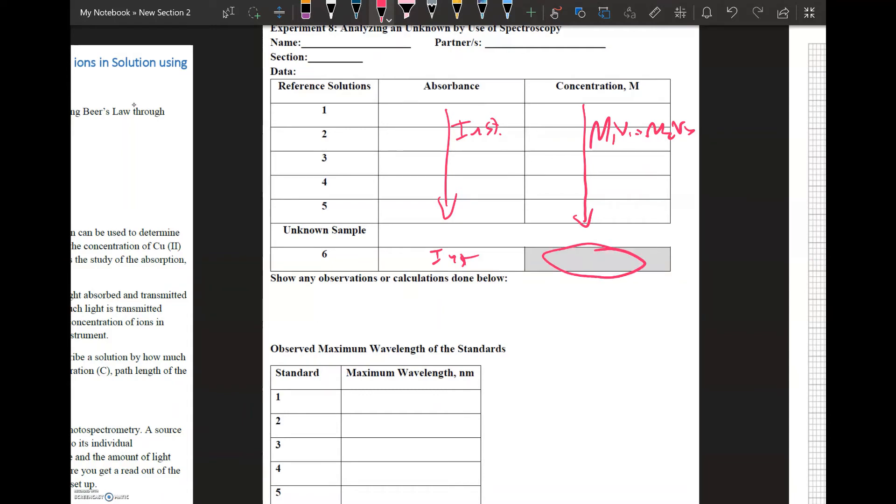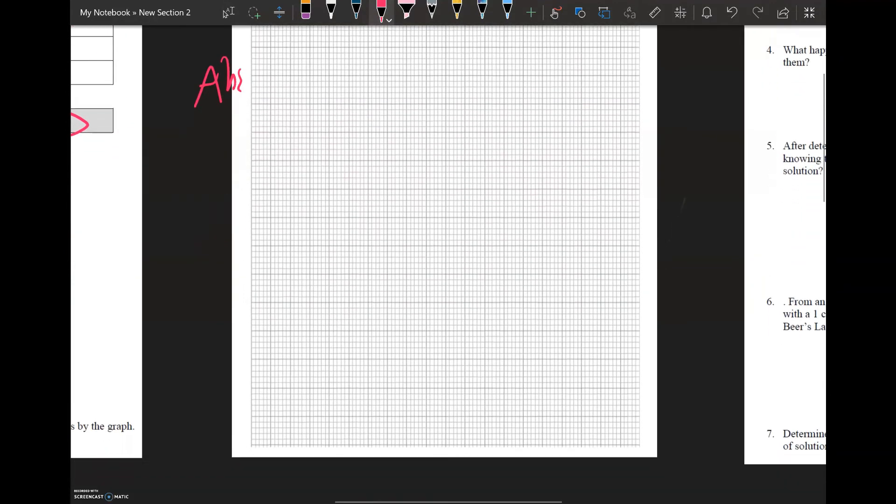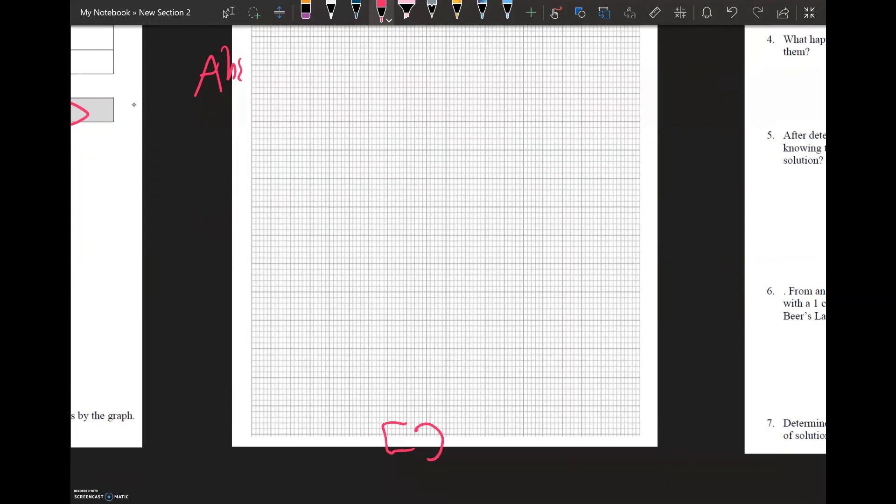This is going to be determined graphically. On the graph paper, you're going to be plotting absorbance versus concentration. And it's really best to turn your graph 90 degrees. So that way you get a better graph in the end.